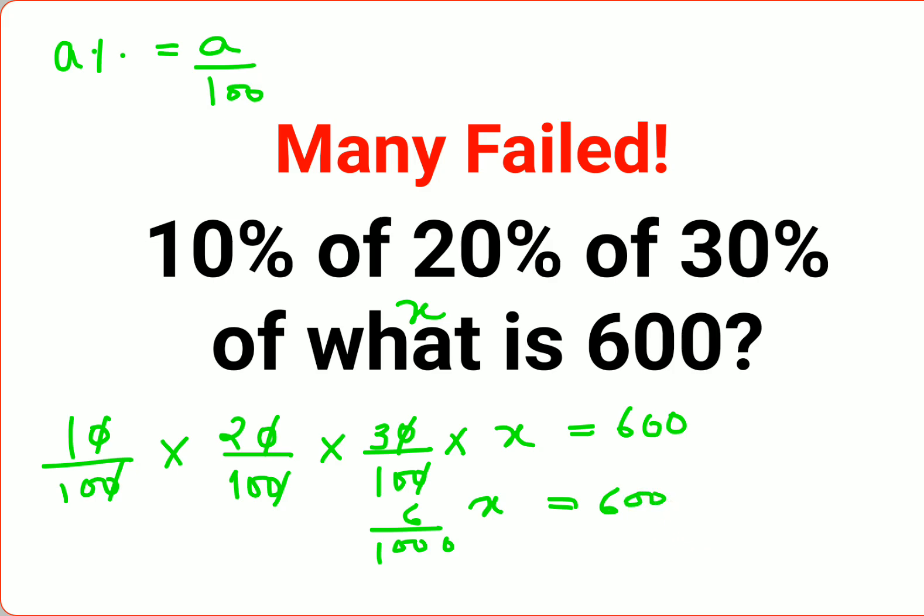So in order to find the value of X, you multiply both sides by 1000. This 1000 and this 1000 cancel, and then you divide both sides by 6. So this 6 and this 6 cancel.